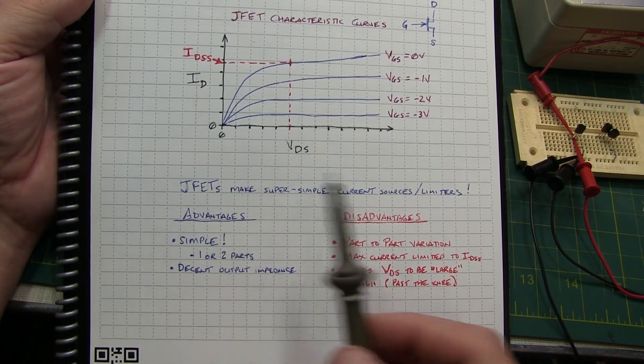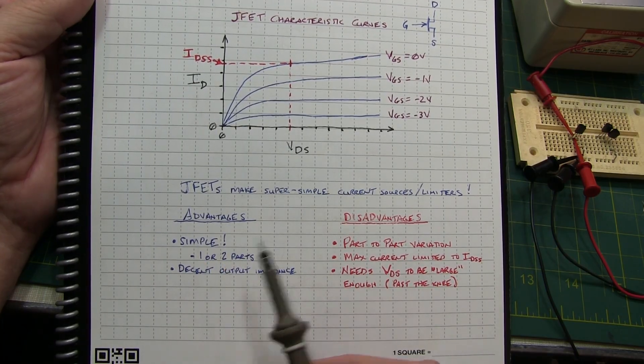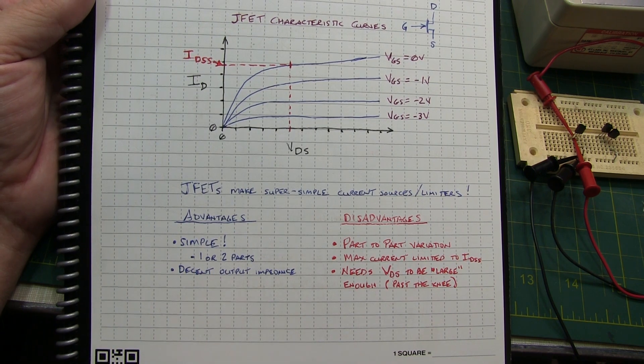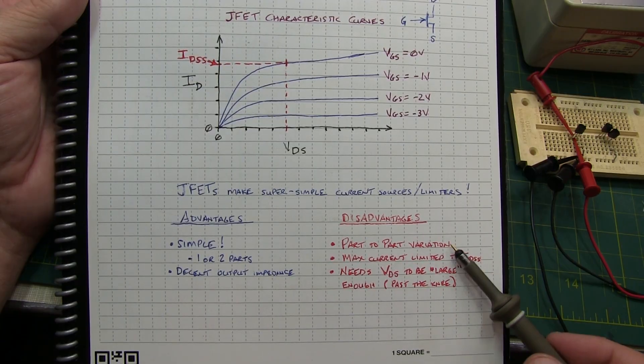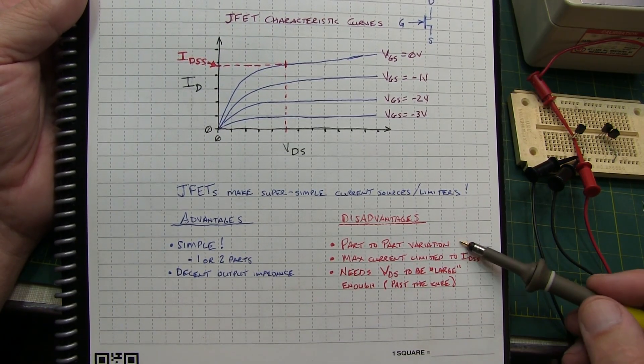The advantages of the JFET current source is that they're super simple, often just one or two parts, maybe three parts to make a current source, and they have pretty decent output impedance. The disadvantage though is that there can be a lot of part-to-part variation, but if you're doing just a simple one-off project it might be a nice simple solution for you.